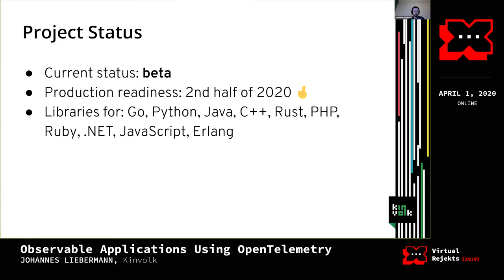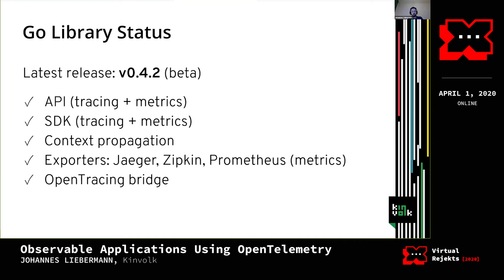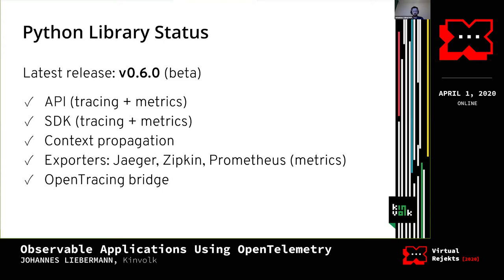The project is currently in beta, planned for GA in the second half of this year. We currently have libraries for Go, Python, Java, C++, Rust, PHP, Ruby, .NET, JavaScript, and Erlang, with more languages expected later. The project is already useful today — you can produce useful tracing data with it. The Go library (latest release v0.4.2) and Python library have an API and SDK for tracing and metrics, context propagation, exporters for Jaeger, Zipkin, and Prometheus, and an OpenTracing bridge.